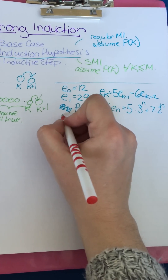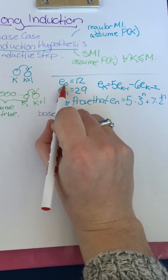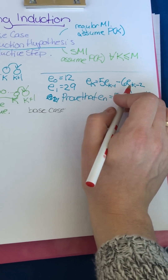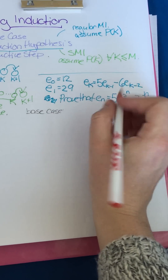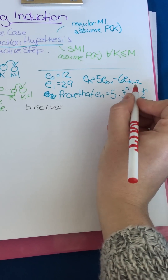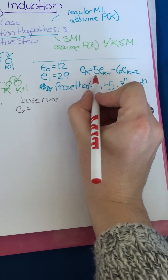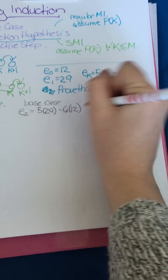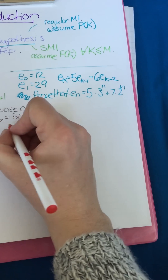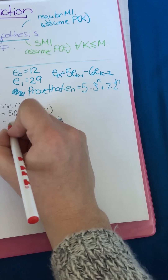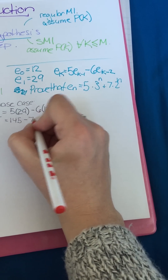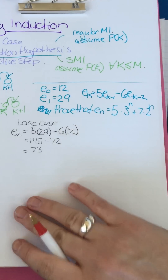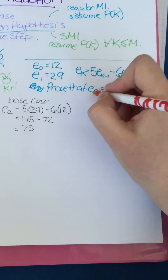Let's do the base case. We're not going to start with zero because we don't have negative indices, and not with one either, so we'll start with E₂ and make sure it holds. E₂ = 5·E₁ − 6·E₀ = 5·29 − 6·12 = 145 − 72 = 73.